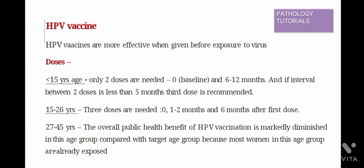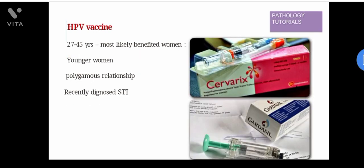For the age group of 15 to 26 years, 3 doses are needed. The first dose is given, then the second dose after an interval of 1 to 2 months, and the third dose after 6 months of the first dose. For the age group of 27 to 45 years, the overall public health benefit of vaccination is markedly diminished because most women in this age group are already exposed to the virus. The most likely benefited women in this age group are women in polygamous relationships and women recently diagnosed with sexually transmitted infections.